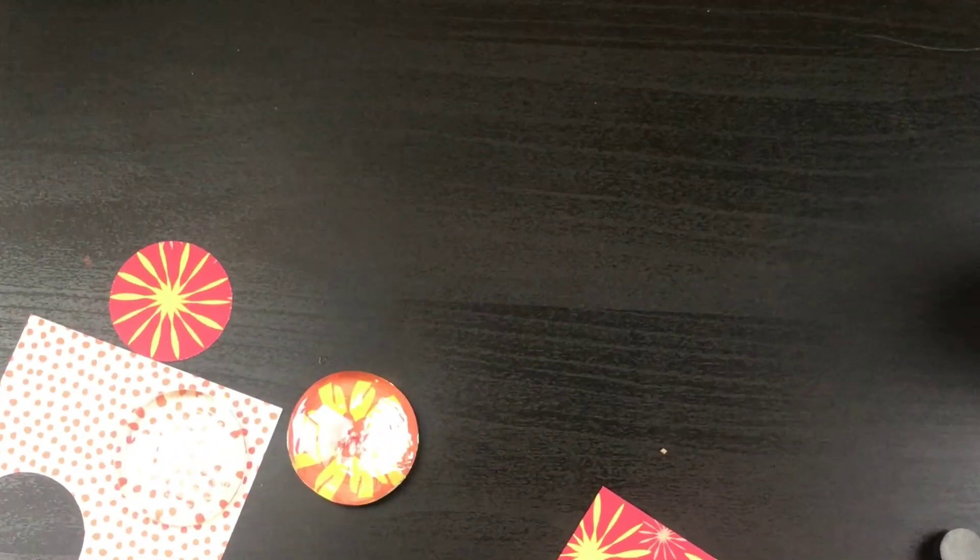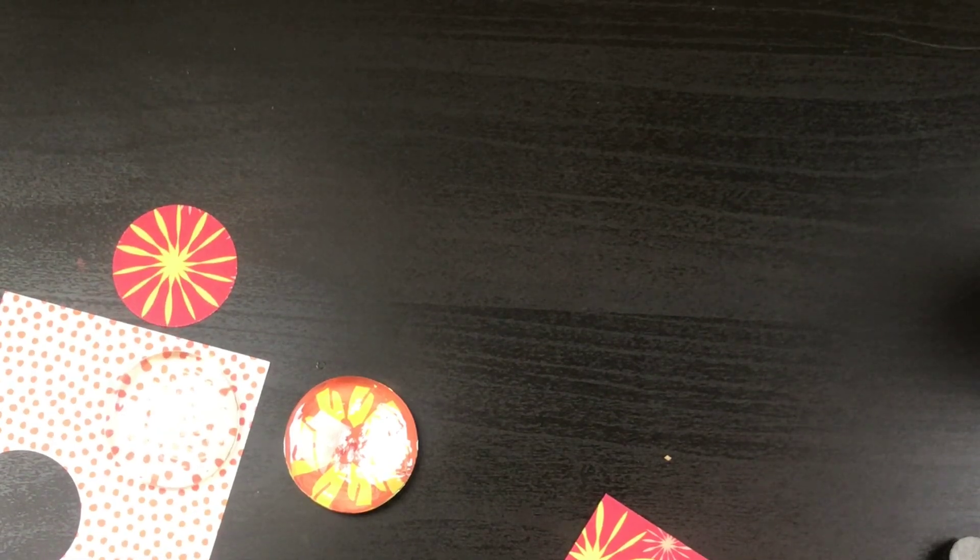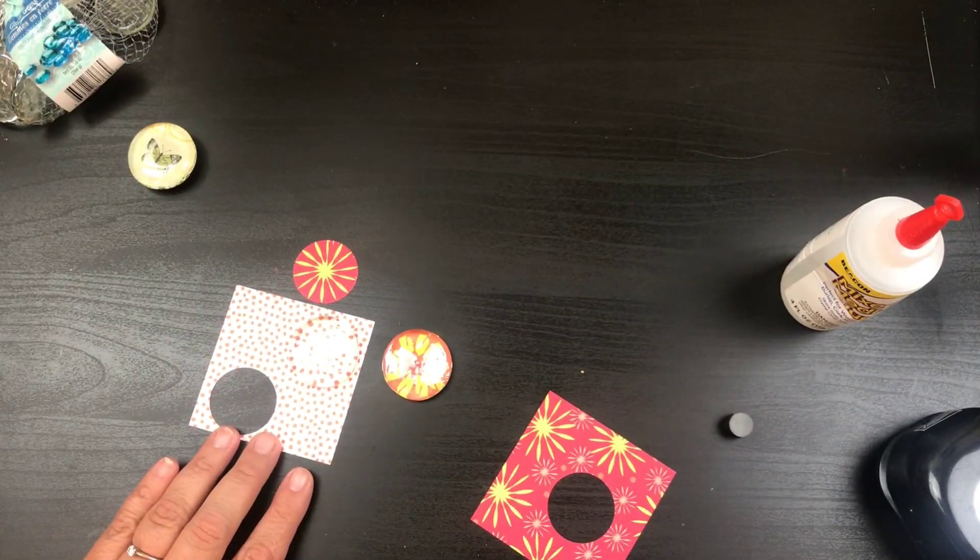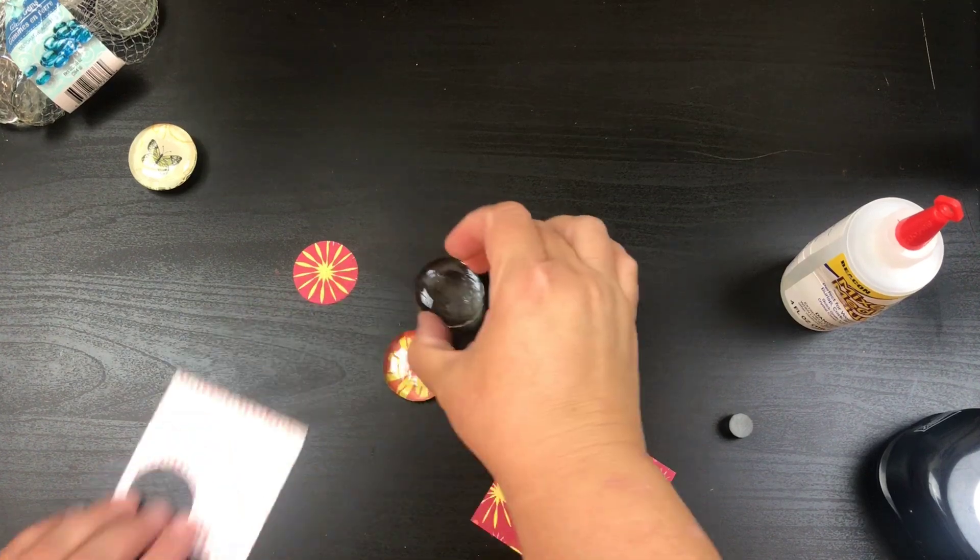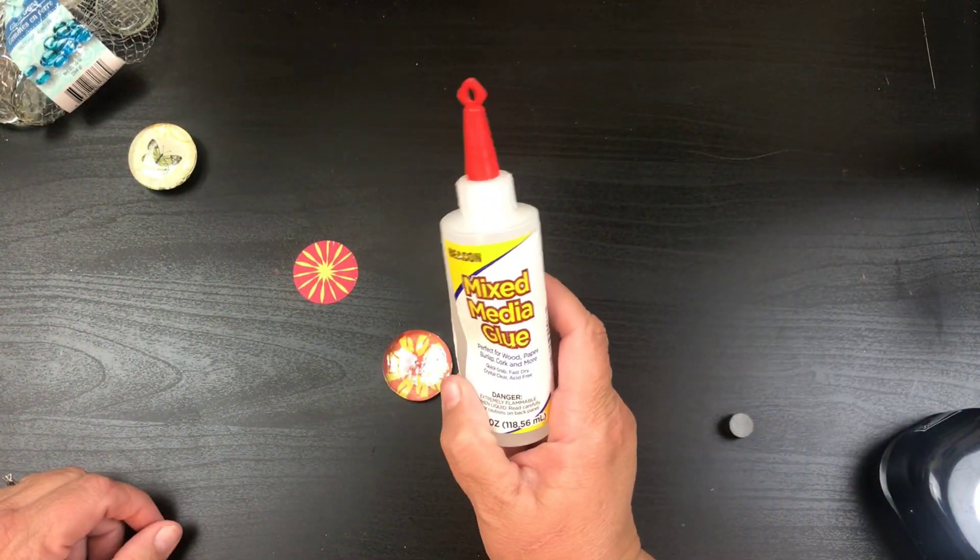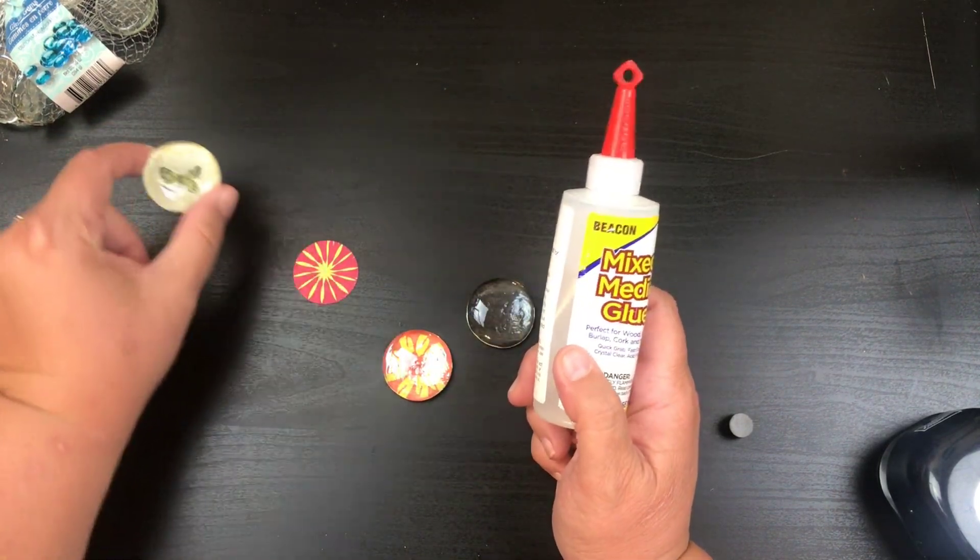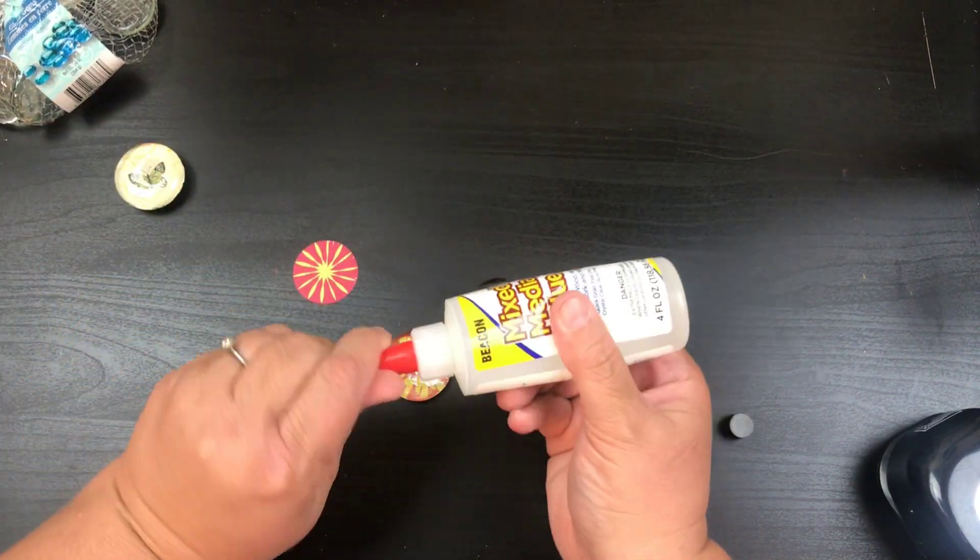Let me go ahead and zoom in there for you so you could see. Now let me show you how easy this is. I'm just taking some mixed media glue. It dries clear and we're just gonna take that here.